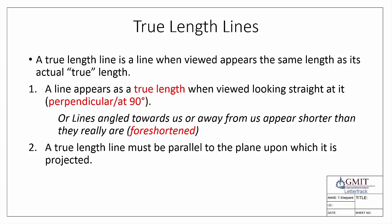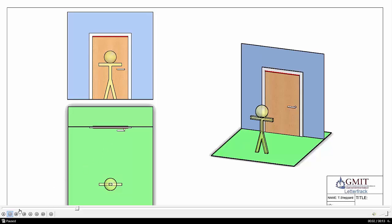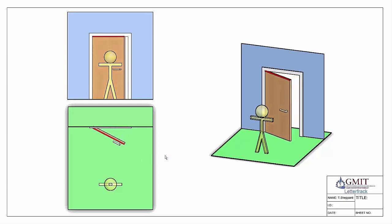Here we have an example of a person standing directly in front of a door. We have the front elevation, the plan view, and a 3D view to help visualize what's going on. The person is standing perpendicular to the door, and from the front elevation you can see that the top edge shows the true width of the door — the same width as the door frame.